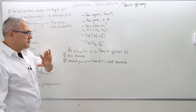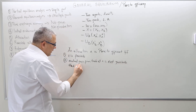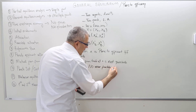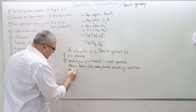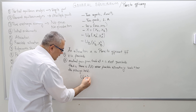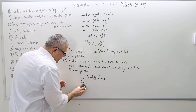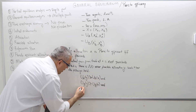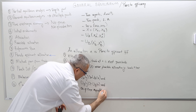I'm going to stick to this definition: an allocation x is Pareto efficient if and only if x is feasible, and two, mutual gain from trade at x is not possible. That is, there is no other feasible allocation y such that u_A(y) ≥ u_A(x) and u_B(y) ≥ u_B(x), and one of these inequalities is strict.